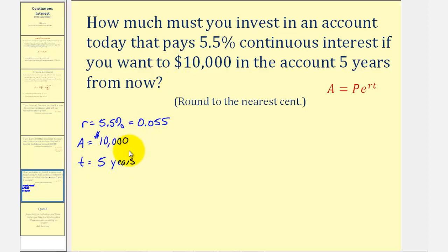So again, our goal here is to find how much we have to invest today, or the value of P. So using the formula, we'd have 10,000 equals P, the unknown, times E raised to the power of R times T, which would be 0.055 times five.